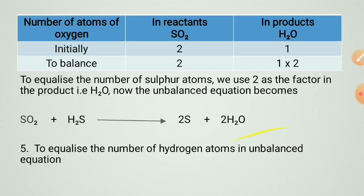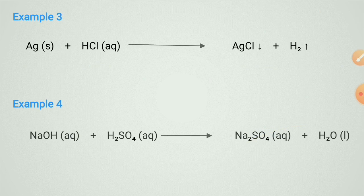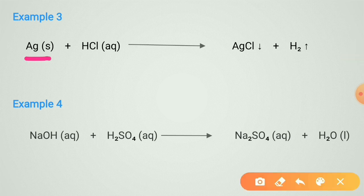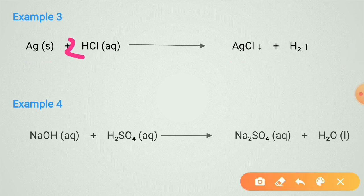Read the question carefully and write the answer accordingly. The reaction has been given; balance the equation directly by checking atoms on both sides. Ag: one in the reactant, one in the product — balanced. Hydrogen: two in the reactant but one in the product — not balanced.